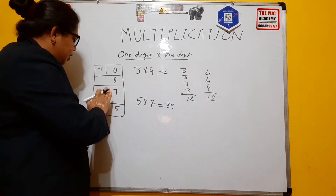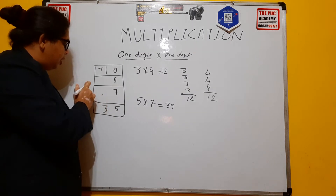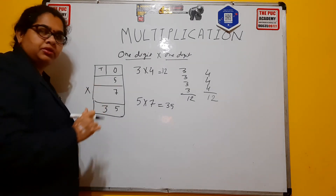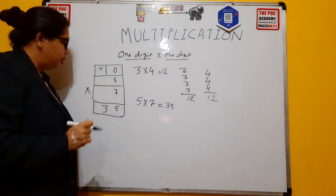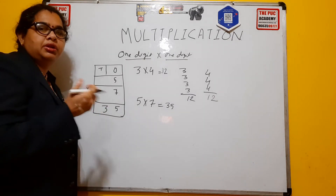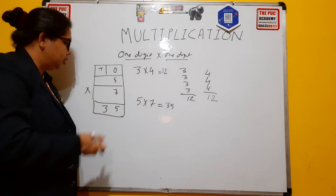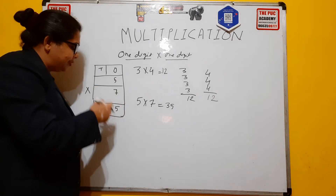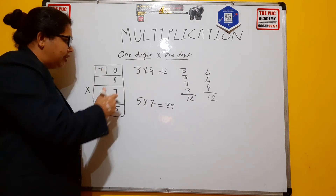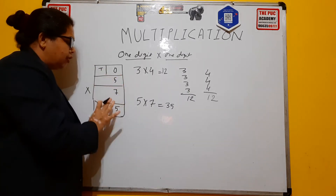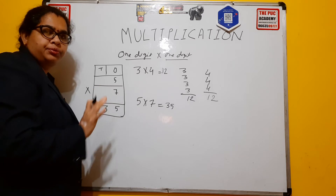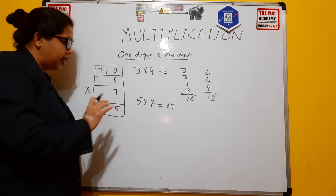This cross/box method is shown here so you will not be confused when it comes to two-digit multiplication. 5 times 7 gives 35. I think now you understand how to do it in the box format.